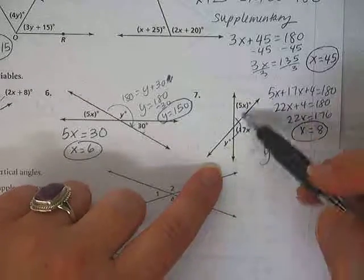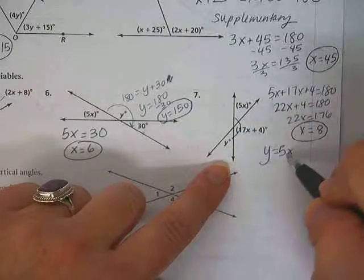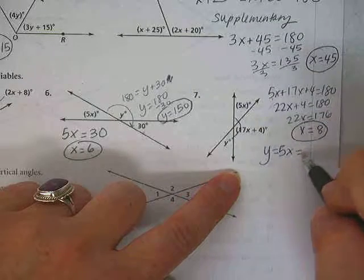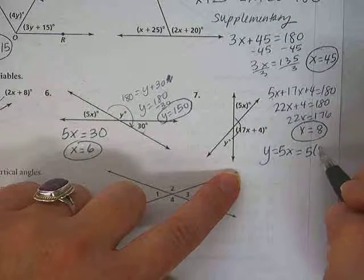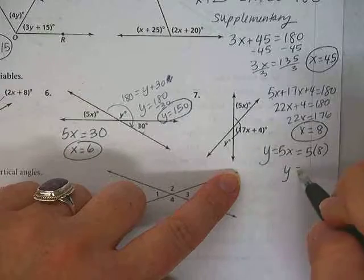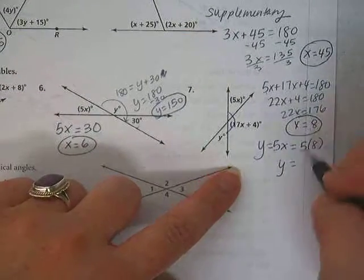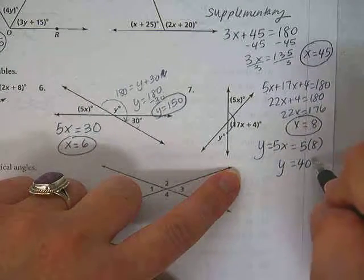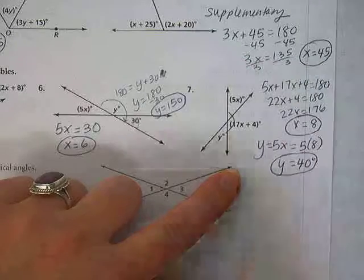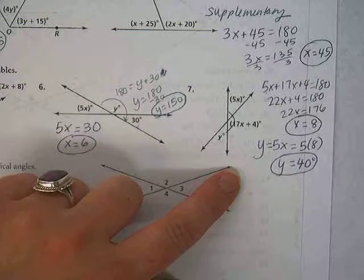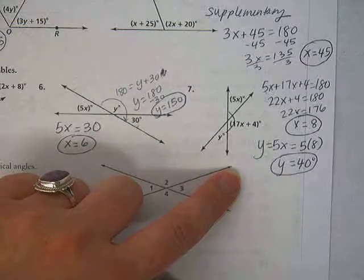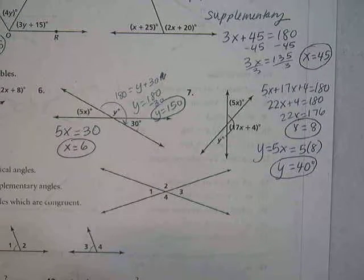We have these vertical angles, and y equals 5x, because they're vertical, so they're going to be equal. But x is 8, so we just plug the 8 in for the x. So what does y equal? Y is 40 degrees, right? So sometimes you have to use one variable in a problem to find the other one.